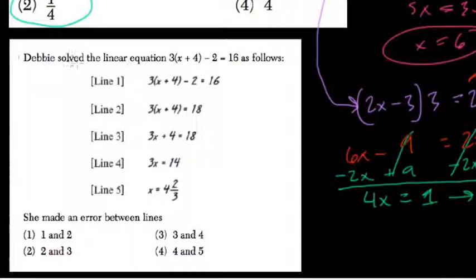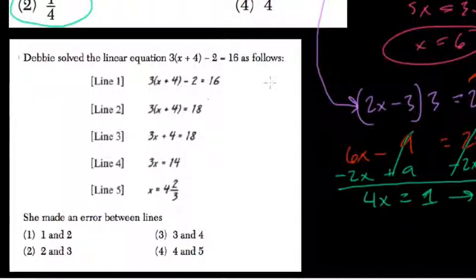We're told that Debbie solved these equations. Where is the error between which two lines? Well, 3 times x plus 4 minus 2.